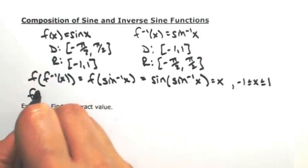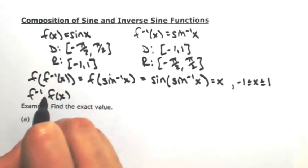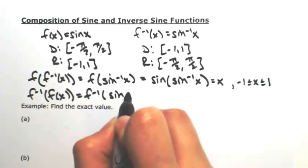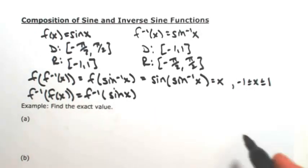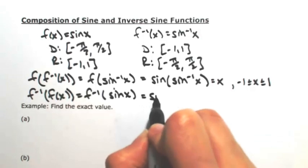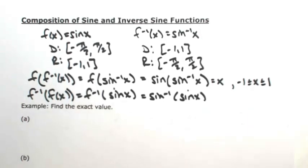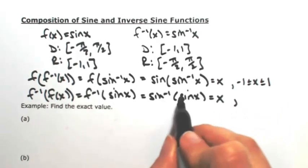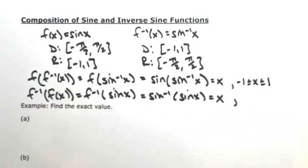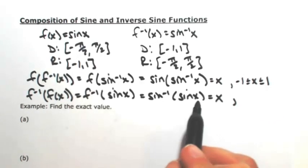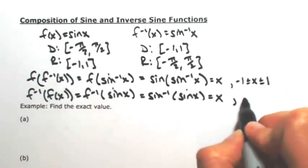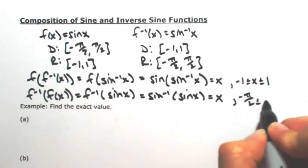If I go the other way, f-inverse composed with f, this time the input will be sine of x. So then I have inverse sine of sine of x. Since these are inverses, they would undo each other, so I would be left with x, as long as sine of x is defined within our restriction. So this x is the domain of sine, which is the angle restriction between negative pi over 2 and pi over 2.